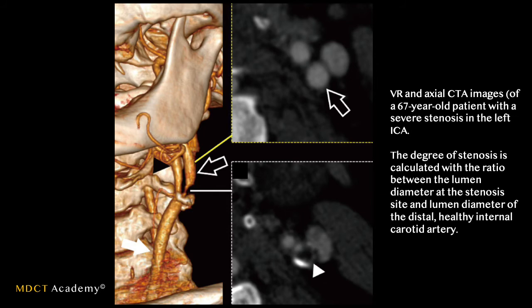Here is another case — a 67-year-old patient with severe stenosis of the left internal carotid artery. The 3D volume-rendered image is on the left, with images above and at the level of the stenosis. The axial image at the level of stenosis shows, with the white arrowhead, a very low-density plaque — almost fat-density — with an irregular wall causing stenosis. Additionally, above the stenosis, you can also see post-stenotic dilation.